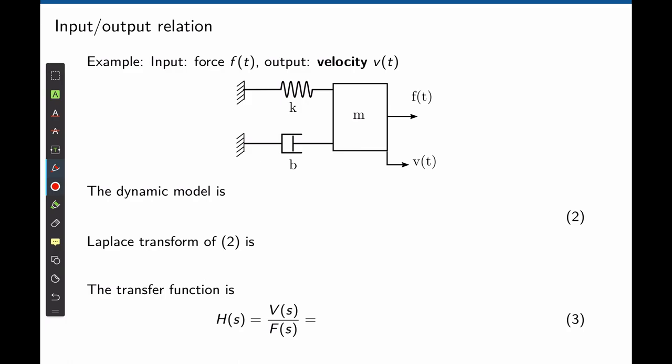Let's do one more example. We have the same mass-spring-damper system with the same input f(t), but now the output is the velocity of the mass v(t), which is the derivative of x(t). The dynamic model needs to be written as a function of v. Let's create a free body diagram of m. The force is applied to the right, so the spring and damper resist motion and apply a force to the left. The damper force is b times the velocity v, giving b·v.